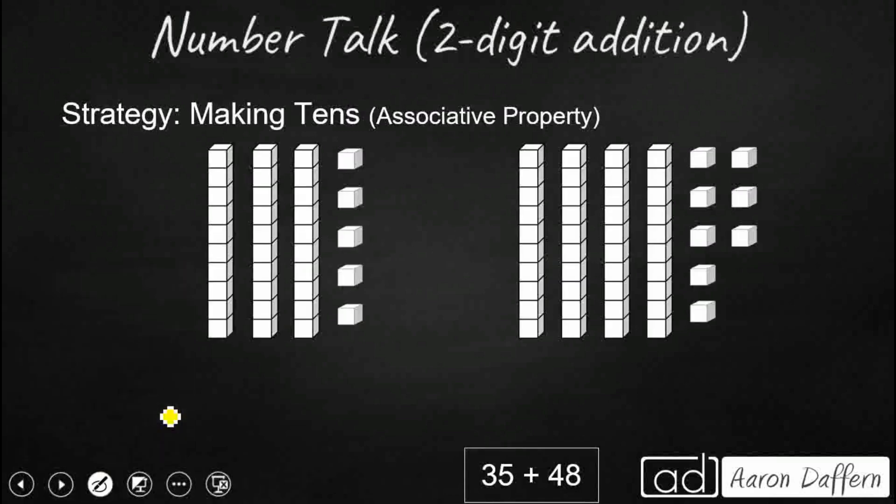So the first thing we could have done is to use our associative property to make tens. Now the associative property is the grouping property that lets us take three or more addends and shift how we group them so we can add them in different orders. So let's take a look at our first addend here. We look at 35 and we always think, how far away is it from the next 10? And so the next 10 up would be 40. So if I wanted to make a 10, I would need to add one, two, three, four, five more.